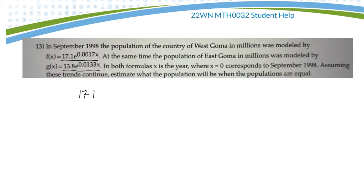So you just go 17.1e to the 0.0017x. When does that equal 13.8e to the 0.0133x? And I guess now I'm sort of in a quandary because I'd love to use the power rule, but the power rule is a little... I guess I could use the power rule.